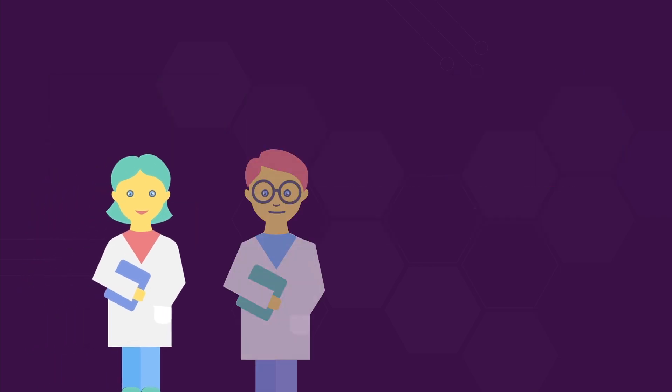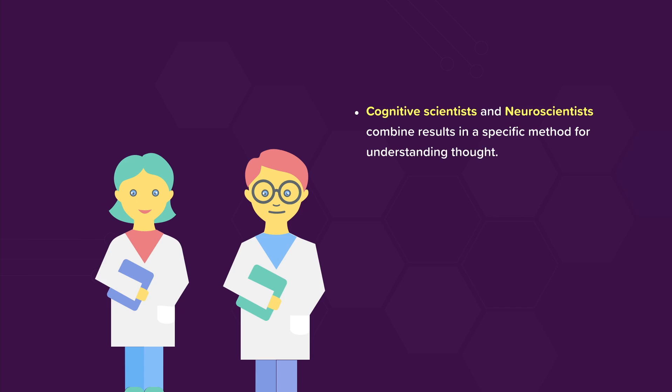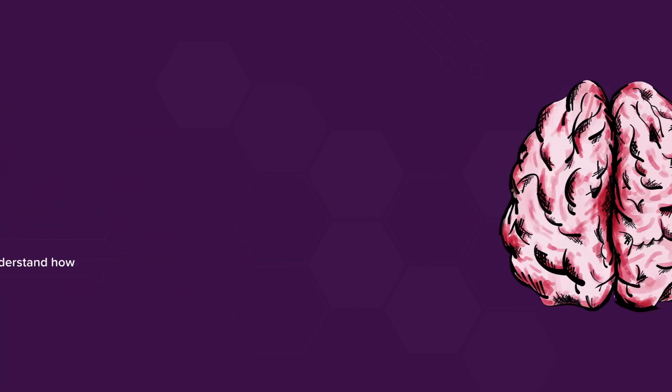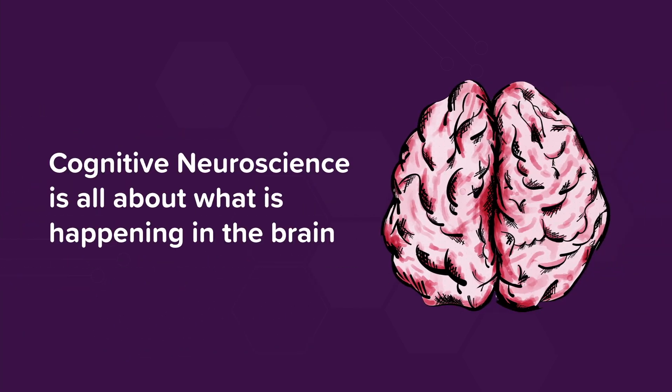Cognitive scientists and neuroscientists combine results in a specific method for understanding thought. Cognitive neuroscientists investigate any aspect of cognition by studying what is going on in the brain at the time of the thought. They study brain processes to understand how the mind works. So in summary, cognitive neuroscience is all about what is happening in the brain.